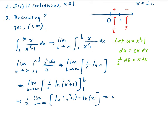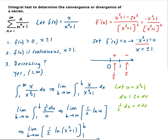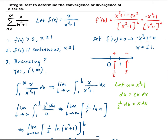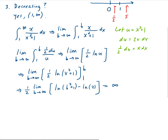So this is going to diverge. Since we're getting infinity, that means the corresponding series must also diverge. If the integral had been converging, then the series would converge. Therefore, this series diverges.